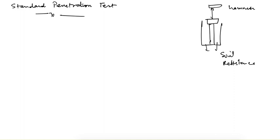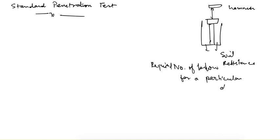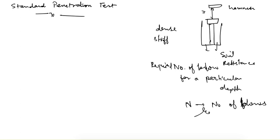We measure that resistance as the required number of blows for a particular depth. For dense sand or stiff clay, more blows are required; for soft clay or loose sand, fewer blows are needed. In this test we find out the N value, which is the number of blows required to penetrate 300 mm.